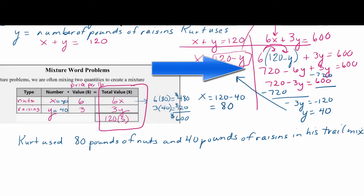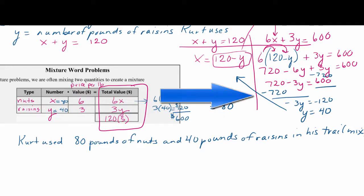Distributing the 6 gives 720 minus 6y plus 3y equals 600. Combining like terms: 720 minus 3y equals 600. Subtracting 720 from both sides gives negative 3y equals negative 120.